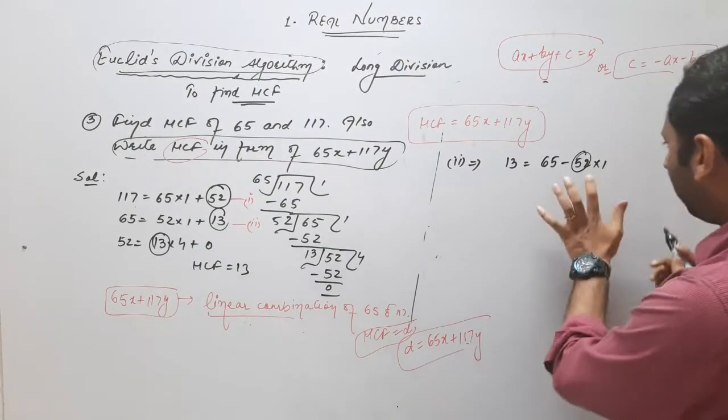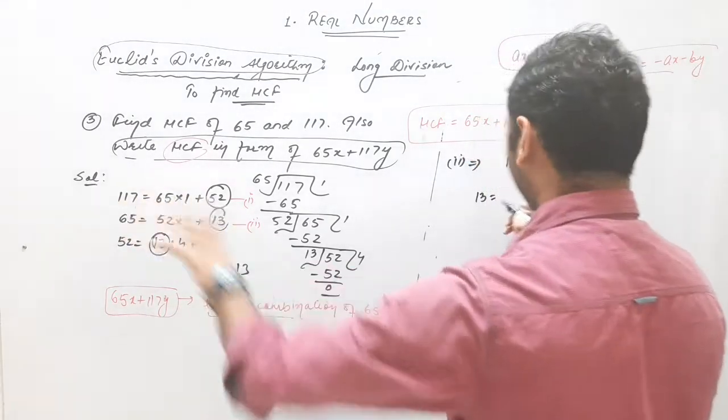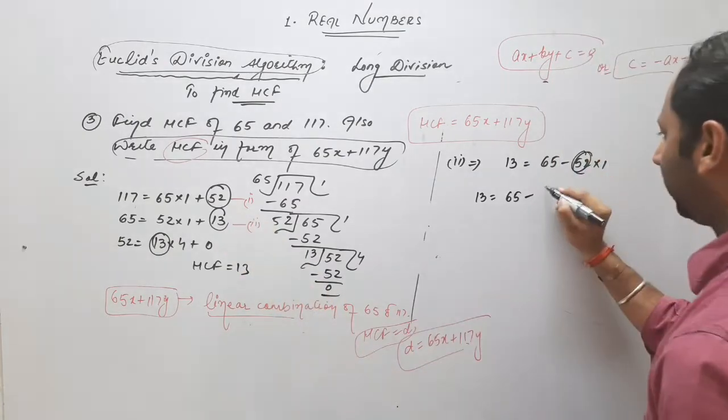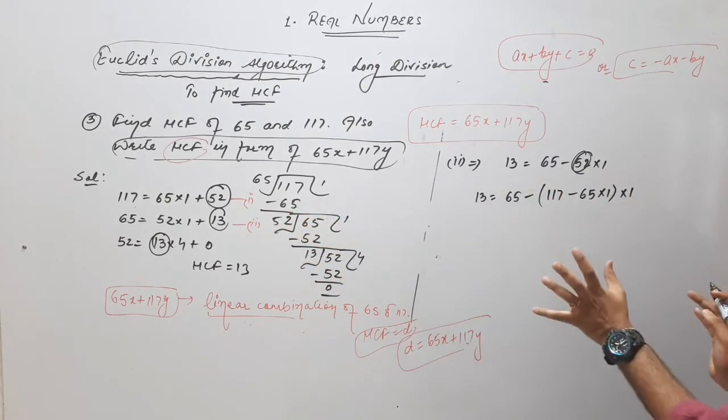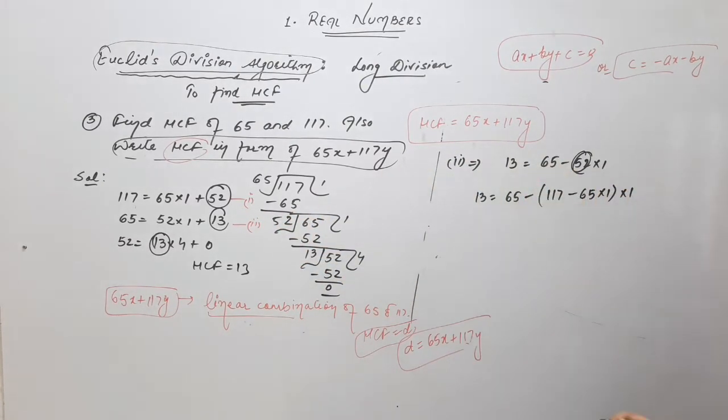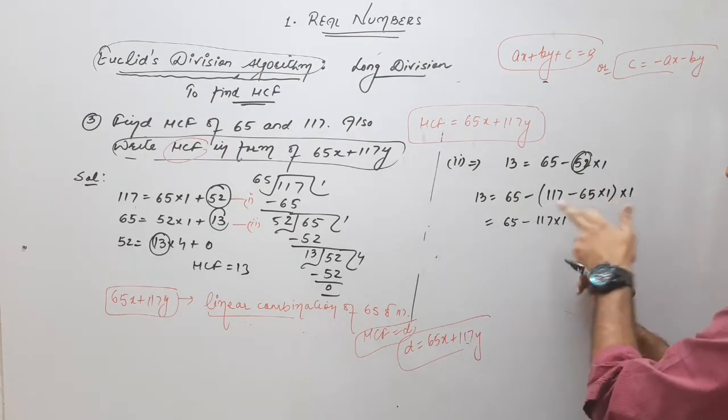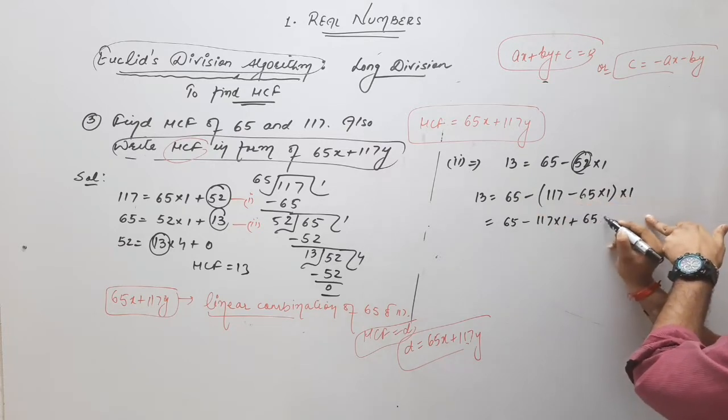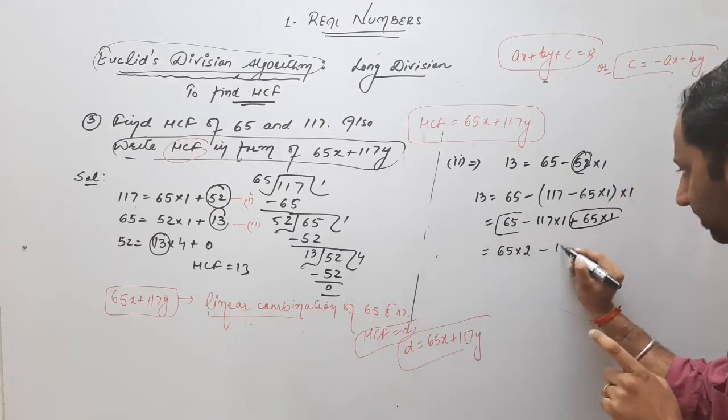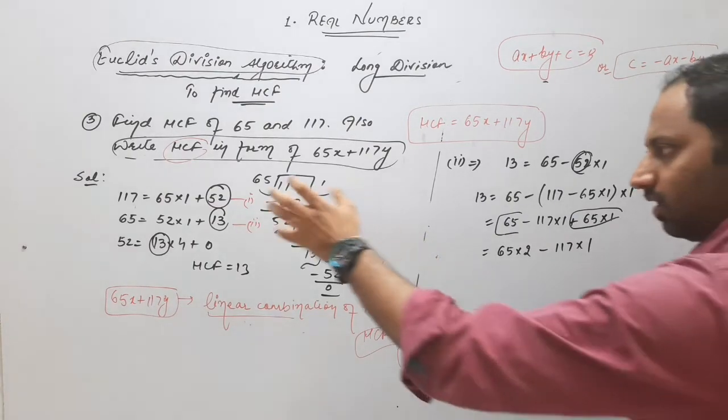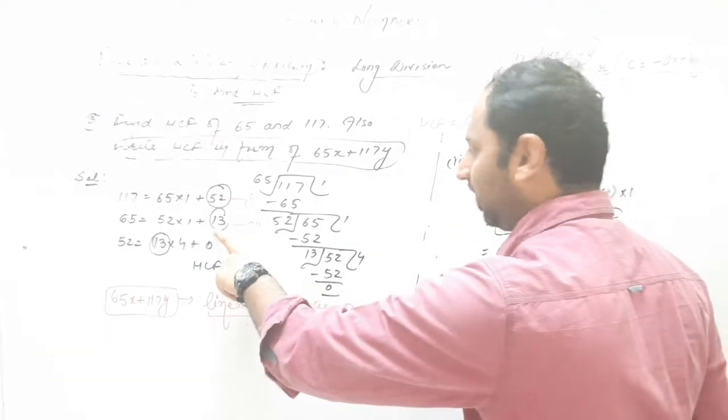52. Where is 52? Don't solve. As it is. 52 to value check. Here we can check. This is from the left. So, it means 52 is 117 minus 65 into 1. I am not multiplying. As it is. Open the brackets, 65. 117 into 1 minus minus plus 65 into 1 into 1. 1, 65, 1, 1, 1, don't write 130.